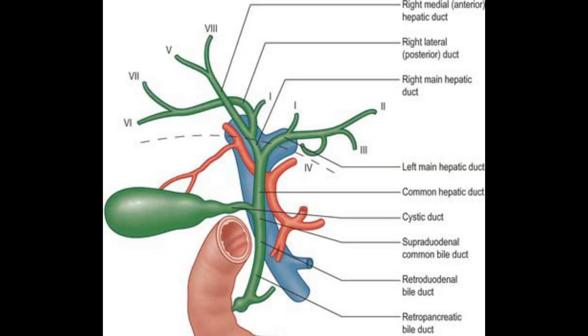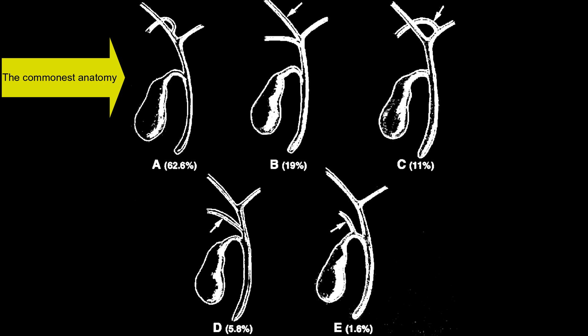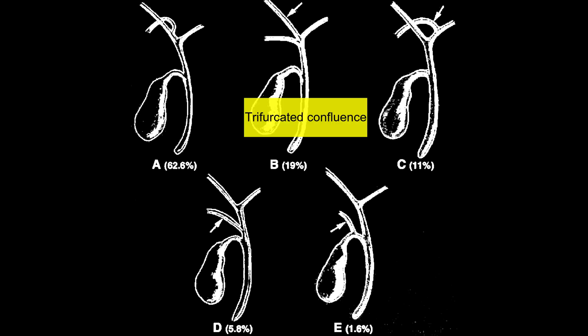This is the routine normal anatomy found in 70% of patients. Looking at the configuration and formation of the hilum, in almost 63% of patients the right and left ducts join together, where the right posterior duct comes from behind and joins the right anterior duct to form the right duct proper. In 20% of patients it is a trifurcated system.